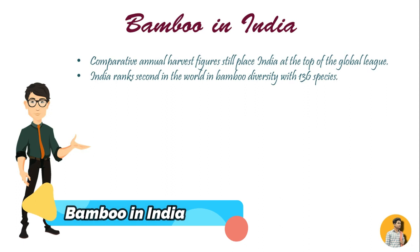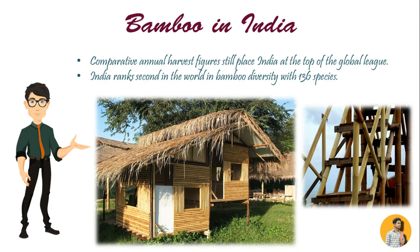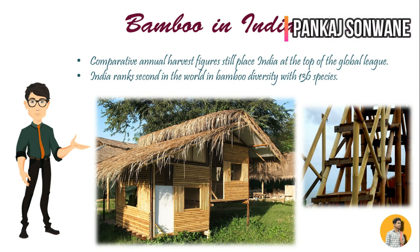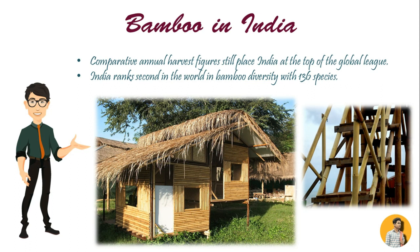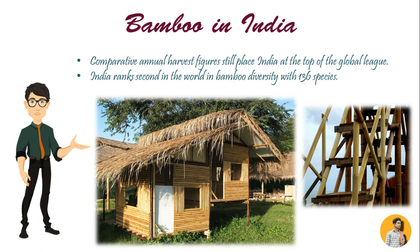Comparative annual harvest figures still place India at the top of the global league. India ranks second in the world in bamboo diversity with 136 species. Two-thirds of the growing stalks of bamboo in India are in the seven northeastern states. The states having major growing stalks are Assam 16%, Manipur and Mizoram 14% each, Madhya Pradesh and Arunachal Pradesh 12% each. The roof of houses is built with local grass and can last up to 10 years before it is replaced. The bamboo weave makes both walls and floors while allowing cross-ventilation throughout, and natural light also comes in through this weave.